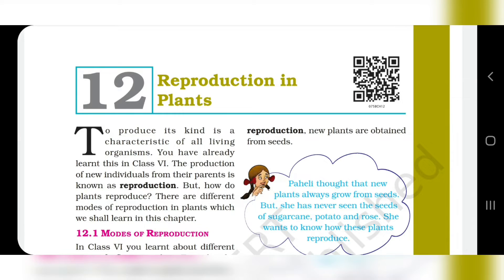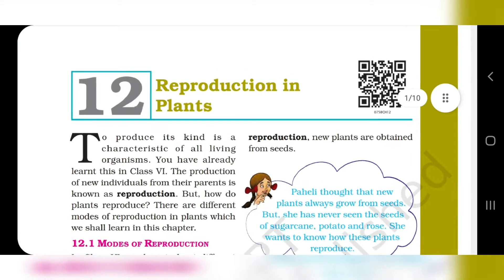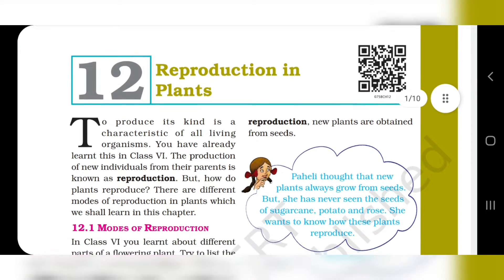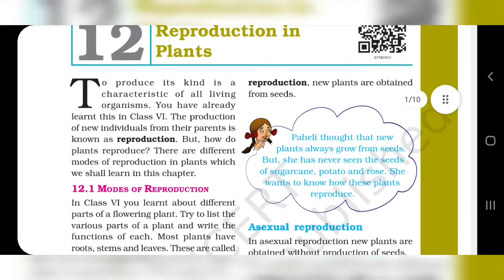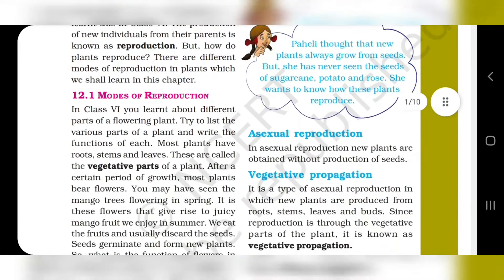Hey guys, today we are going to science class 7th lesson 12, Reproduction in Plants. Reproduction is the process by which new individuals are made from the parents.